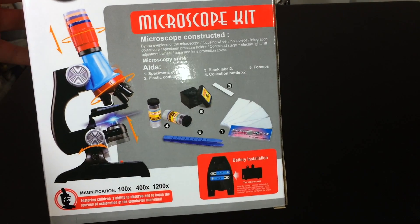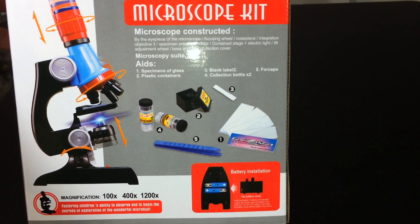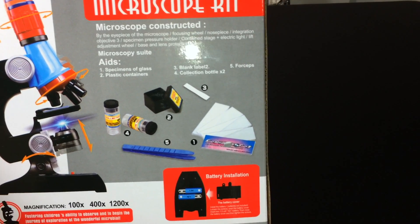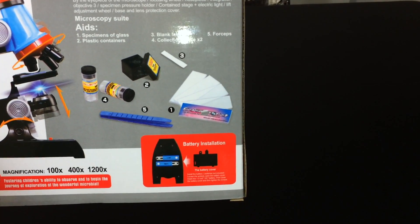So we could tell right here the couple samples that it comes with. It comes with a couple of tubes. I guess you could put your specimen in there. Looks like labels right there are number two. Has some stickers, has some tweezers, and a couple slides right here.